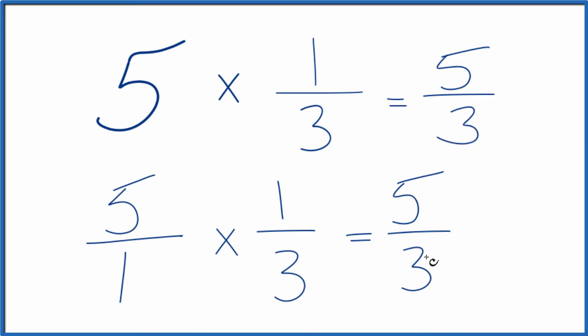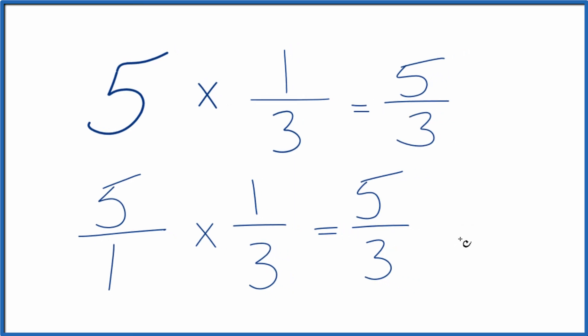This is an improper fraction, however, because 5 is greater than 3. So you could change it to a mixed number. 3 goes into 5 one time with 2 left over. So 1 and 2 thirds, that's our mixed number.